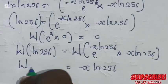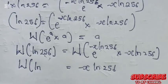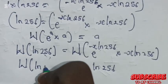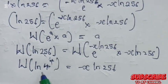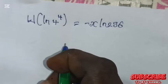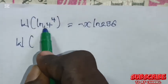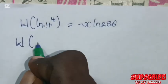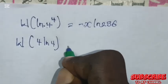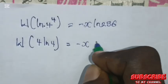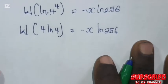On the left-hand side, we have the Lambert W of the natural log of 256. We can write 256 as 4 raised to the power of 4, so we write the natural log of 4^4. Applying the power rule of logarithms, that gives us W of 4 times the natural log of 4, which equals minus x times the natural log of 256.